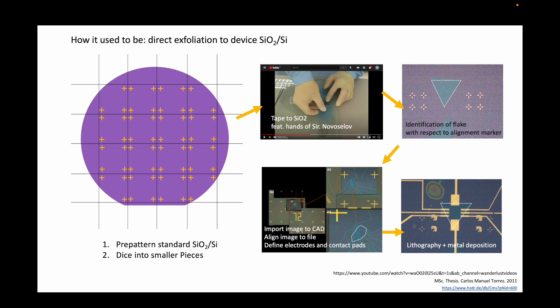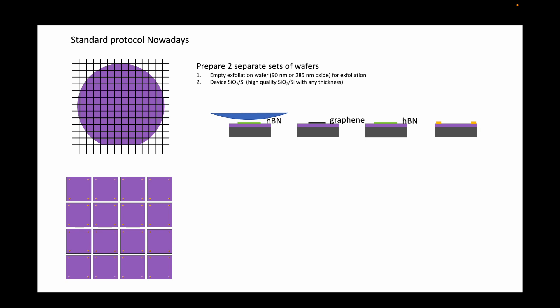Nowadays, the process has changed quite a bit. Now, we separate the wafers where we do the exfoliation and the wafers where we do the fabrication of the devices thanks to the van der Waals assembly techniques, which we will go over in the second half. In this process, we will start with at least two sets of wafers, one for the exfoliation and one for the fabrication.